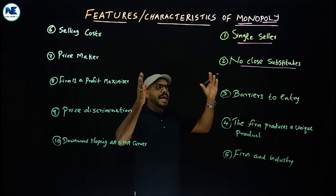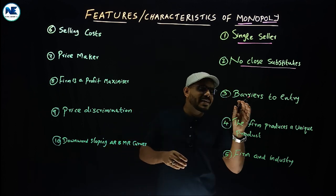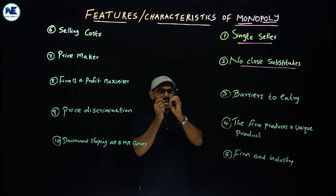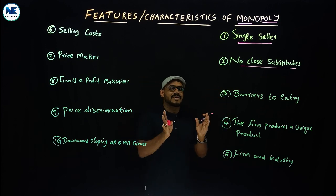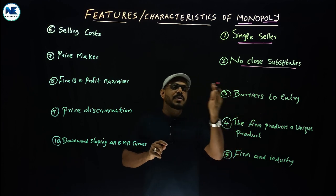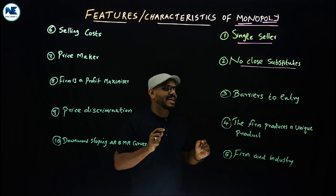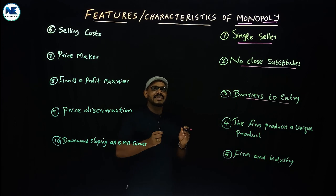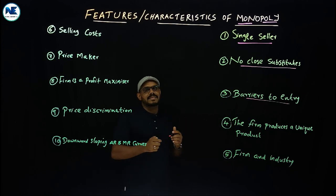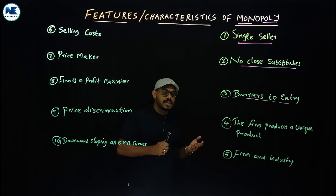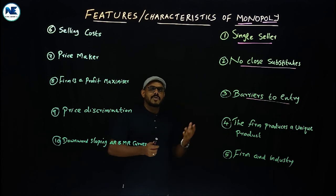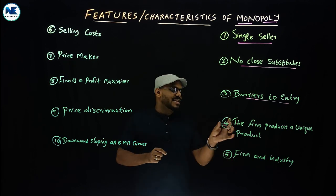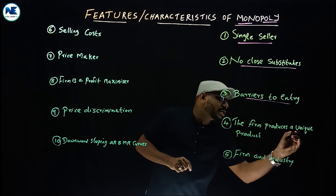The third feature is high barriers to entry. Barriers means restrictions or bottlenecks — the entry of new firms is strictly restricted. We will discuss this in more detail in the coming video under types or kinds of monopoly.